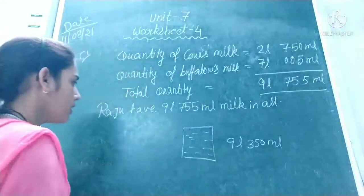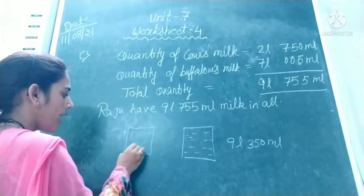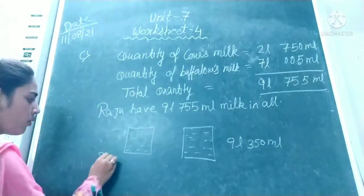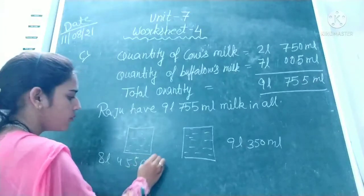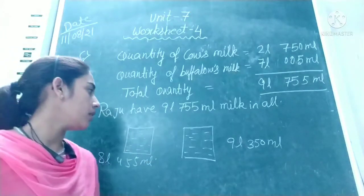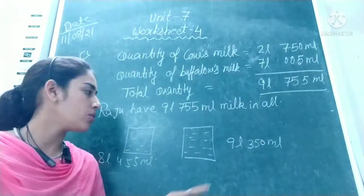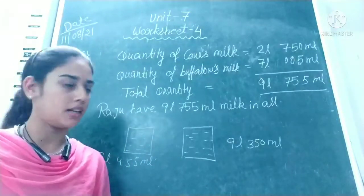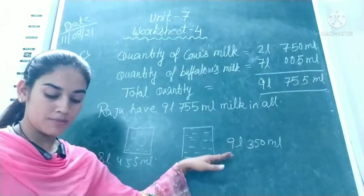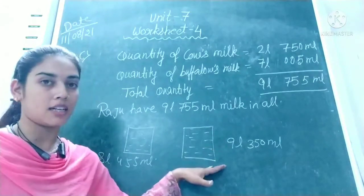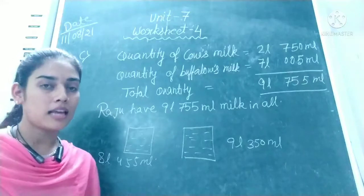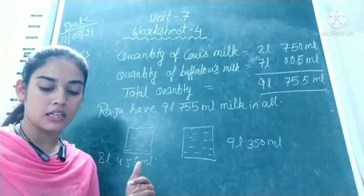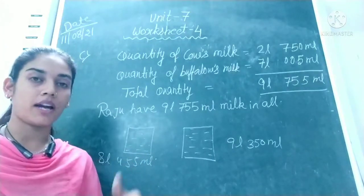Shalu has another bucket which holds 8 litres 455 millilitres of water. We want to find whose bucket holds more. You can see that 9 litres 350 millilitres is greater than 8 litres 455 millilitres, so Ramu's bucket holds more water than Shalu's bucket. Now the question is, by how much more?